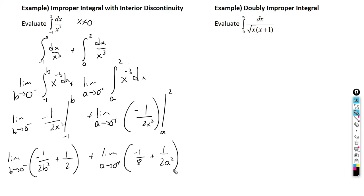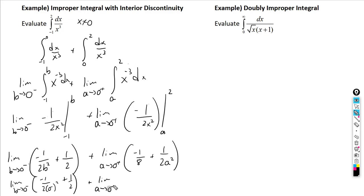Now plugging in 0: for the first piece we get −1/(2·0⁻²) + 1/2, and for the second piece we get −1/8 + 1/(2·0⁺²).